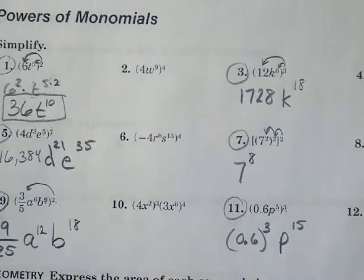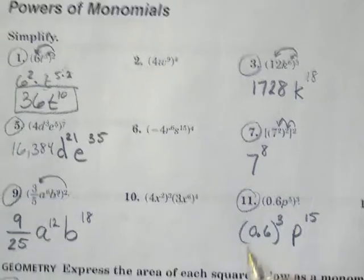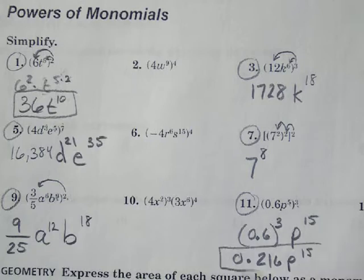If I wanted to figure that out, I would do 0.6 times 0.6 times 0.6 on my calculator to end up with the true value of 0.216 P to the 15th. And I could write it as such.